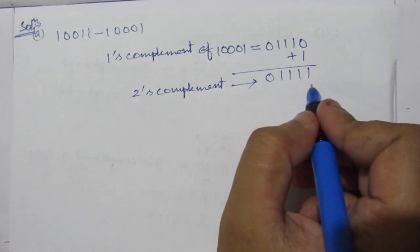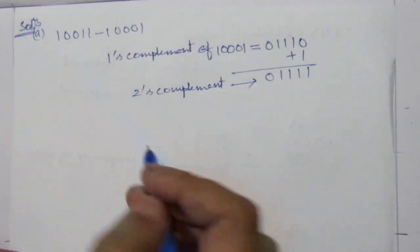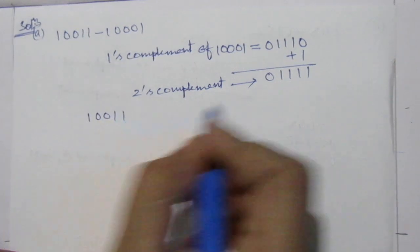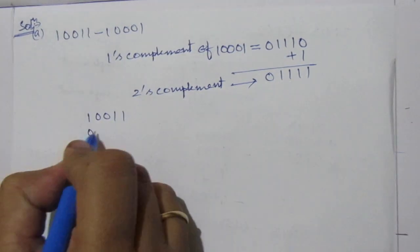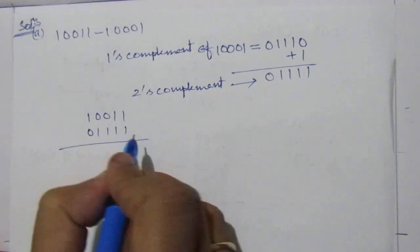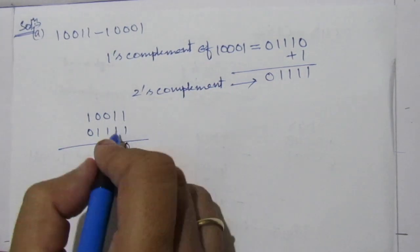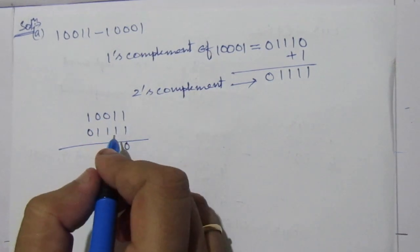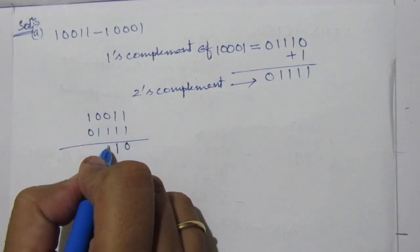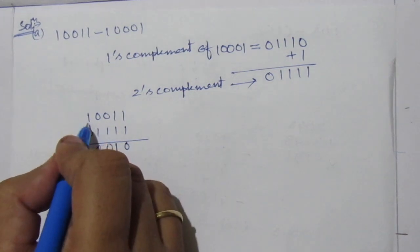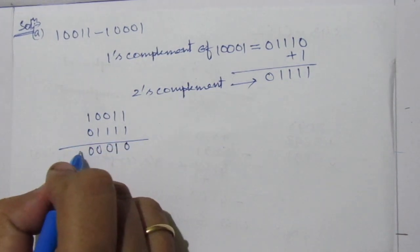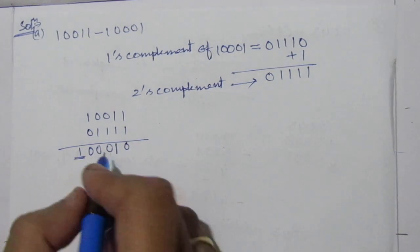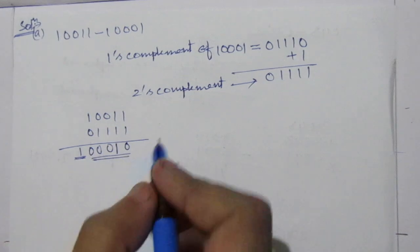Now add this 2's complement to the minuend. So you add 10011 to 01111. We get: 1 plus 1 is sum 0, carry 1; 1 plus 1 plus 1 is sum 1, carry 1; then 0, 0; and 1 plus 1 is 0, carry 1. This carry is discarded. The remaining bits are the difference.